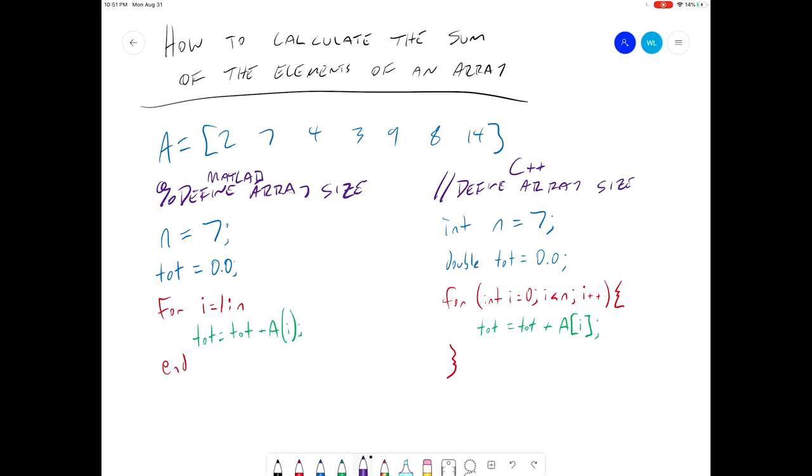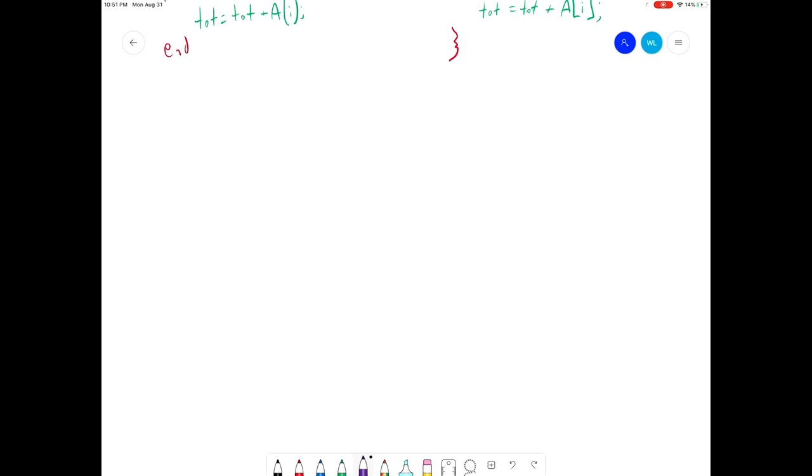So now let's say we want to move along to a multi-dimensional array. So here we have everything for a vector. That's the one-dimensional array. But let's say we have a two-dimensional array. So we'll scroll up here and we'll write out our two-dimensional array. So now we want to find the sum of this array.